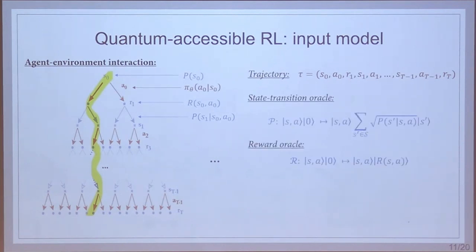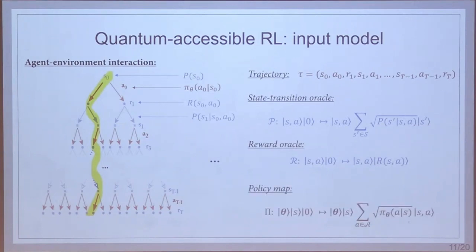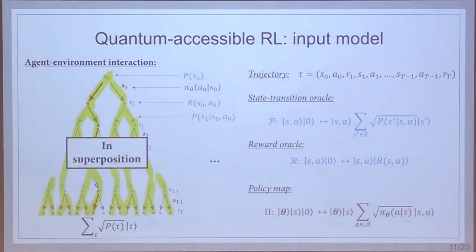Classically you sample one trajectory, but a general quantum extension of the reward and state-transition oracles is straightforward. The state-transition oracle is just a probability oracle for sampling access, and the reward oracle is a binary oracle giving rewards for a state–action pair. We also consider policies that can be implemented coherently — enabling quantum samples of the policy. This is natural for raw PQC policies and more general ones. With these two oracles and the policy map, we can prepare a superposition of all paths in the tree, which is very useful for the quantum algorithms we'll present.